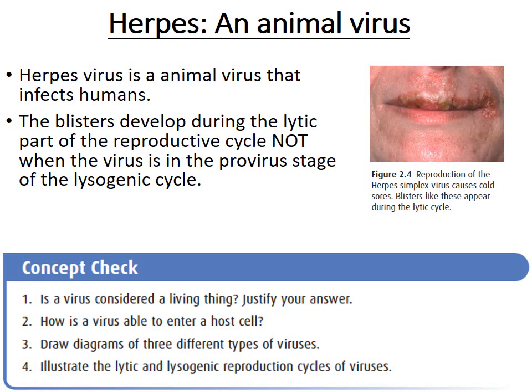Some viruses are animal viruses. The herpes virus, for example, infects animal cells specifically. Blisters caused by herpes develop during the lytic cycle, when the virus bursts open cells after producing enough new viral particles inside them.